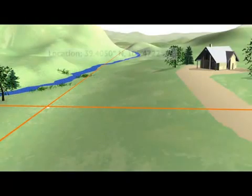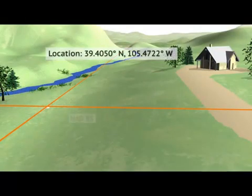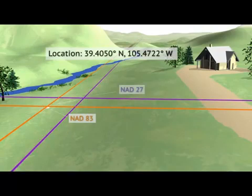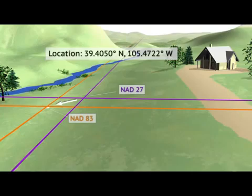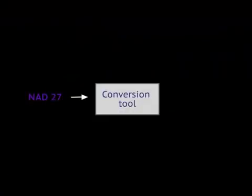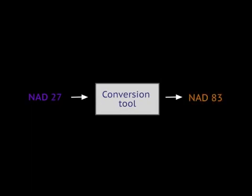Unfortunately, NAD83 and NAVD88 aren't the only datums you will encounter. Before the current datums were defined, many maps were created using different starting points, and even today, people continue to change datums in an effort to make them more accurate. When combining data from different users or eras, it is important to transform all information to a common datum. Let's look at some examples of when and why using a consistent datum is important.